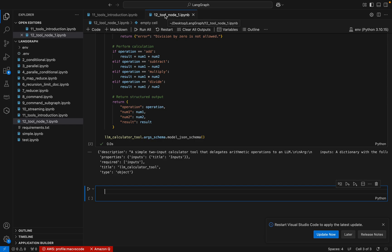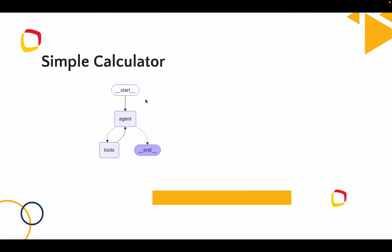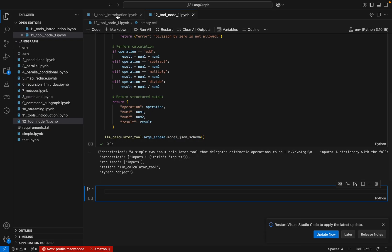Now, coming to the tool node, let me go back to the PowerPoint. This is the LangGraph we are going to build. We will have an agent, and from the user the agent will get an input. Then conditionally we loop through the tool node function. Whenever input comes in, the agent is invoked, then conditionally we check if tool calls are available. If the message contains tool calls, we execute them using the tool node. This process repeats until all tools are executed. When the agent responds with no tool calls, it goes to the end.